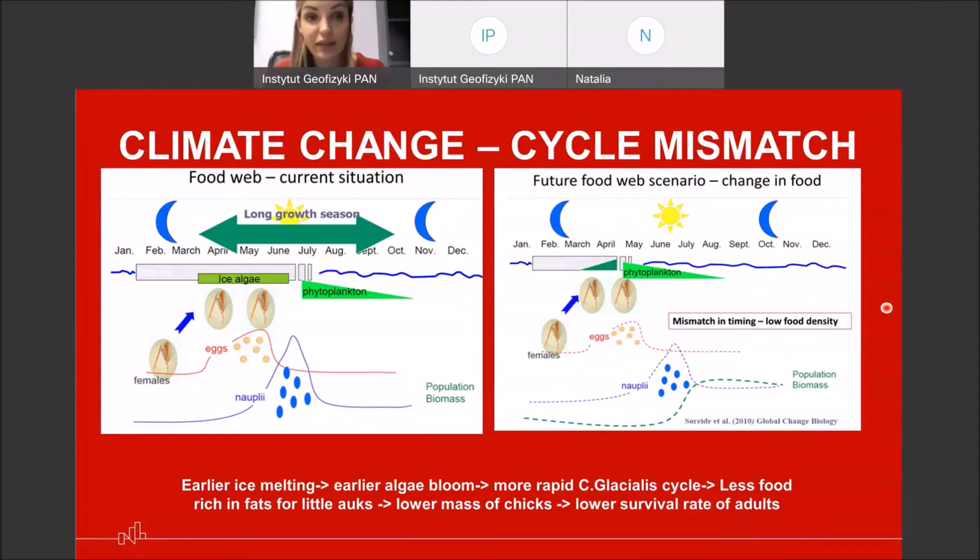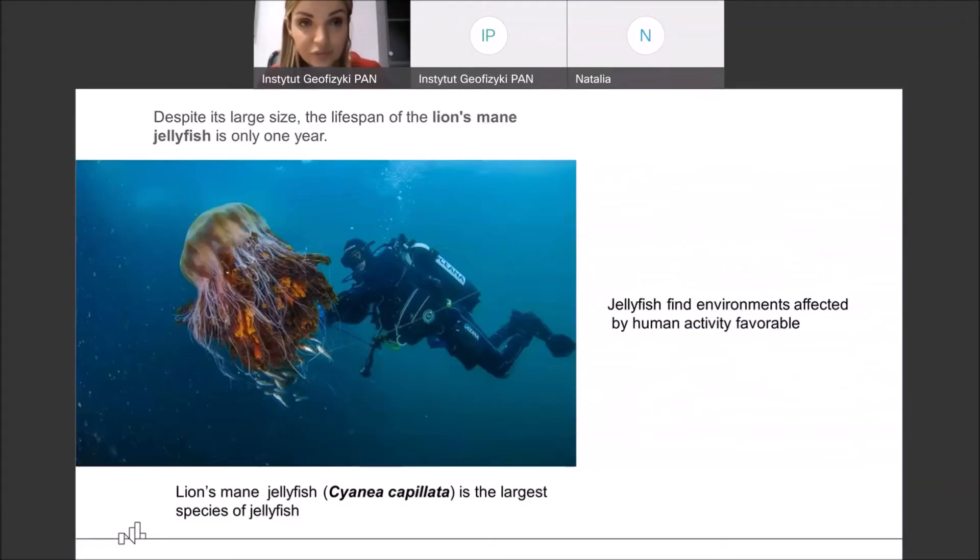And this means a lower survival rate of adult birds. So this little disruption and this, not even the question of the amount of Calanus glacialis, but also the question of when it is available, when the abundance of this food is available, can disrupt the whole cycle, can lead to decline of little auks and have consequences even for availability of nutrients on land. As I mentioned, zooplankton has different sizes from unicellular organisms to very large, really, really large organisms, like this one. So they're not always tiny, they can be gigantic, like this representative of the zooplankton.